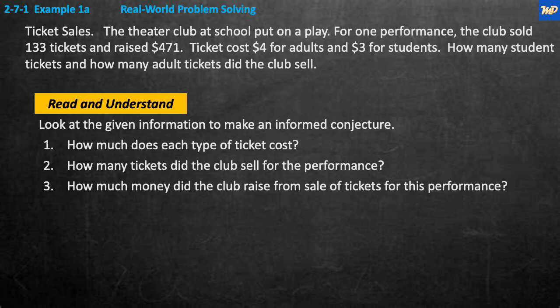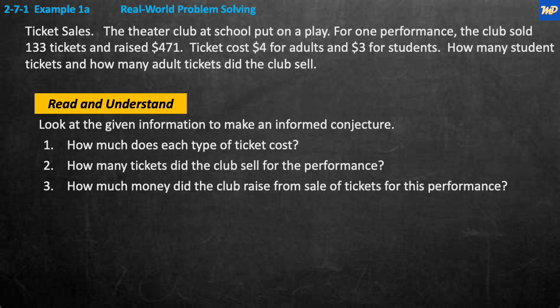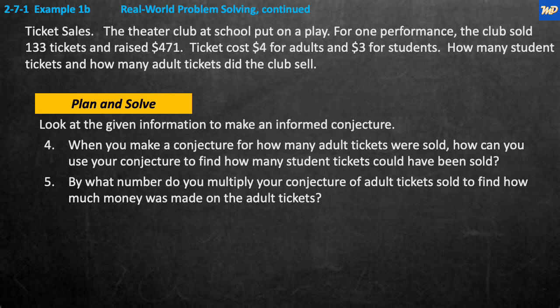We start by reading and understanding the problem — looking at the given information to make an informed conjecture. What would be a good guess as to how many adult and how many student tickets were sold? You need to pull out: how much does each ticket cost, how many tickets did the club sell — 133 tickets — and how much money did the club raise — $471.